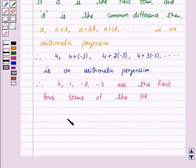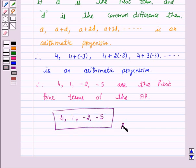Hence, when A is equal to 4 and D is equal to minus 3, then 4, 1, minus 2, minus 5 are the first four terms of the AP. And this is our answer.